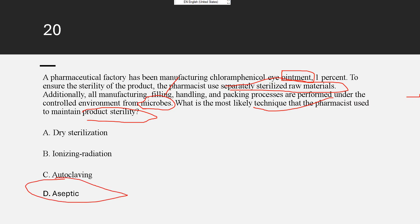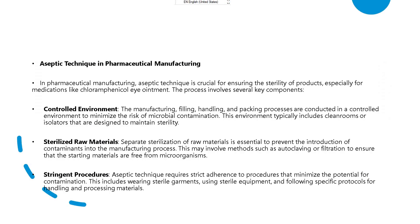Aseptic technique is the best answer. While autoclaving, ionizing radiation, and dry sterilization are effective for sterilizing individual materials, aseptic technique is specifically focused on maintaining sterility of the product throughout the entire manufacturing process, including controlled environment manufacturing, filling, handling, and packing.